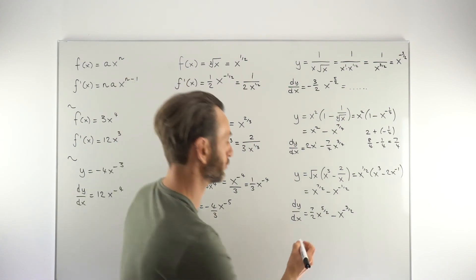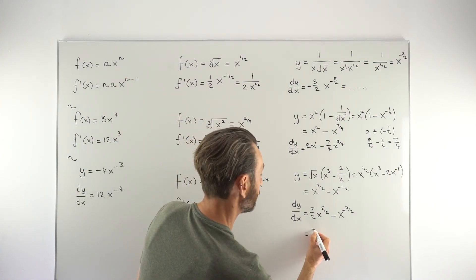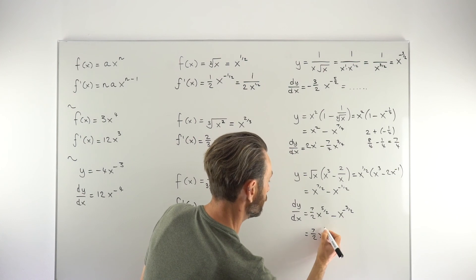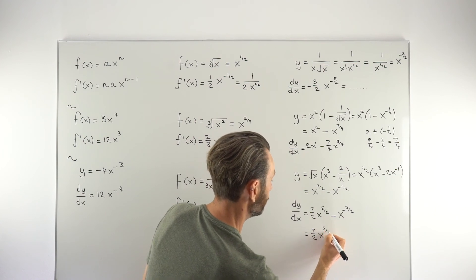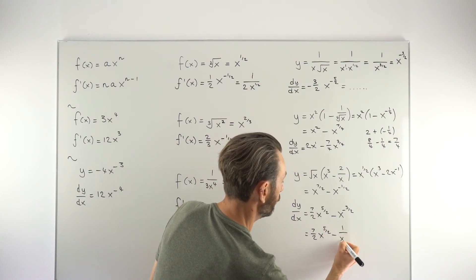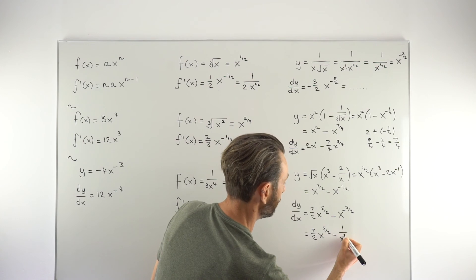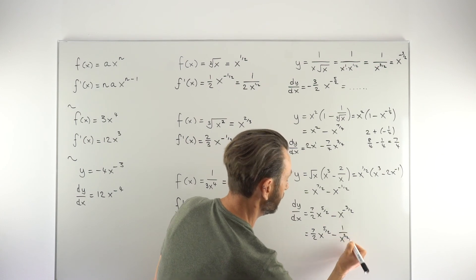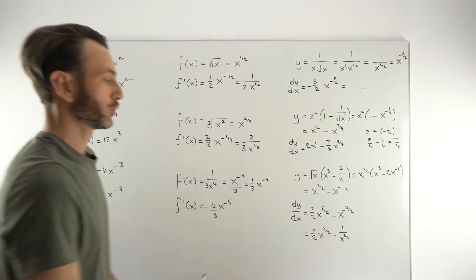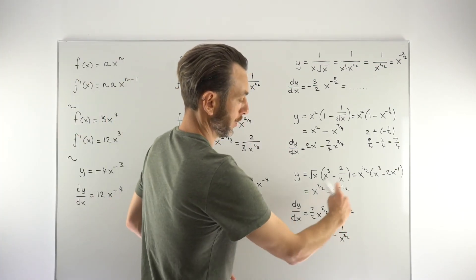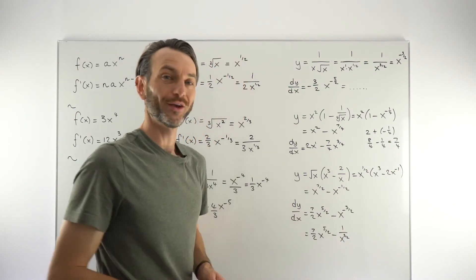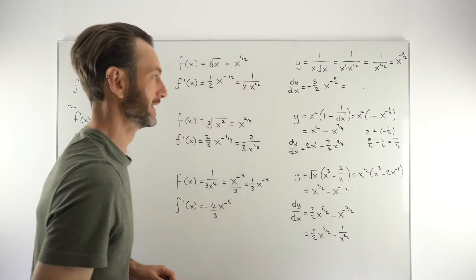Let's go ahead and do that — rewrite with positive powers. The first term stays as seven over two X to the power of five over two. The next term becomes one over X to the power of positive three over two — same term but on the bottom of the fraction with a positive power instead of a negative.